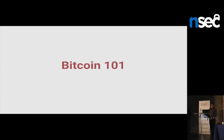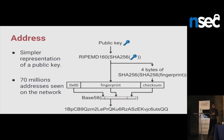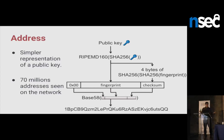Bitcoin 101 — I'll do some shortcuts. First of all, an address is your identity on the network. It's based on the public key. You generate a public-private key pair, take your public key, hash it, encode it, and you get an address. That's mostly it — it's a simpler representation of a public key. So far, I've seen 70 million addresses on the network.